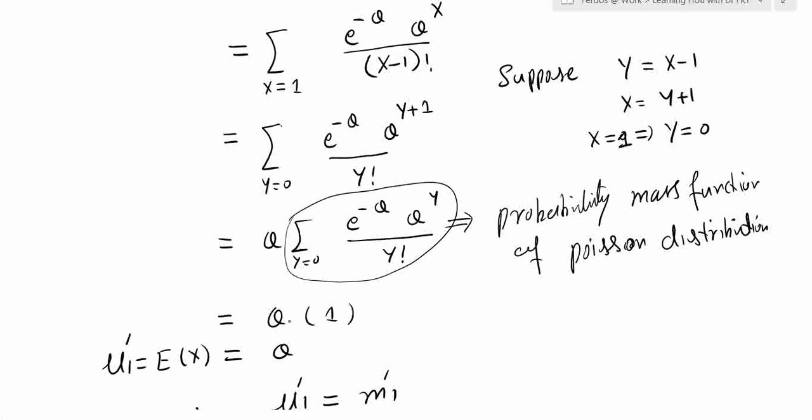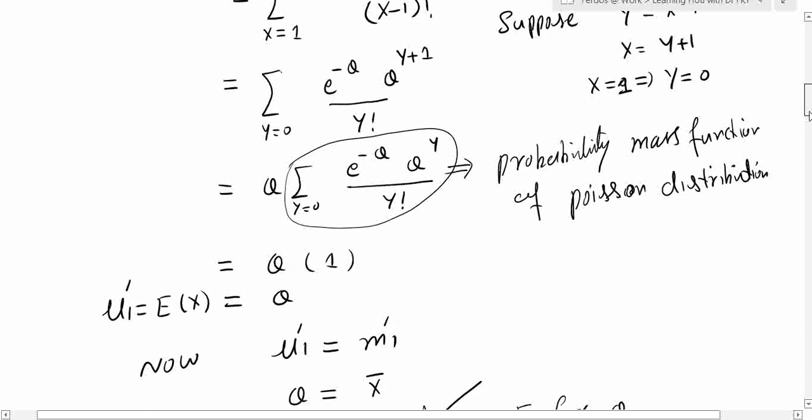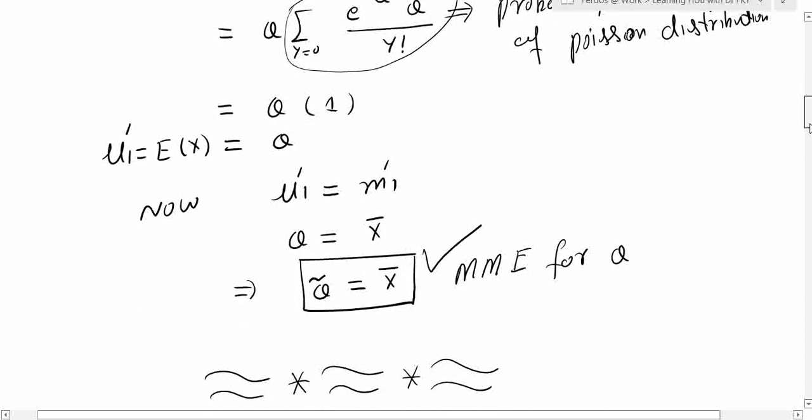Therefore, E[X] = mu_1' = theta. Since m_1' = x-bar, setting mu_1' equal to m_1' gives the method of moments estimator: theta-hat = x-bar. So for a Poisson distribution with a random sample of size n, the sample mean x-bar is the method of moments estimator for the unknown parameter theta.